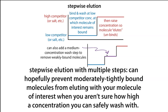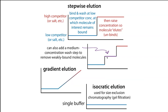By adding a medium step, you keep your protein of interest isolated from the mediumly bound proteins, which come off at that intermediate concentration. This stepwise approach also protects you — if your molecule of interest does come off at a lower concentration, you haven't lost it mixed in with everything else. You've still separated things out. The downside of stepwise elution is that you need to have a sense of what concentration your protein comes off at.